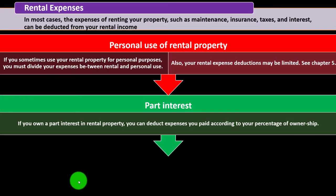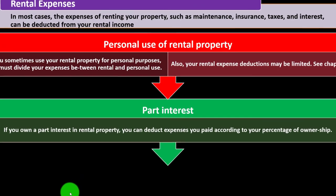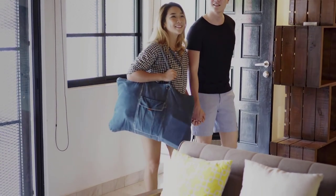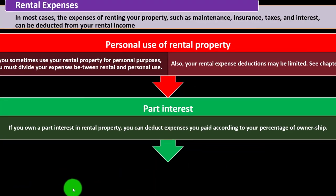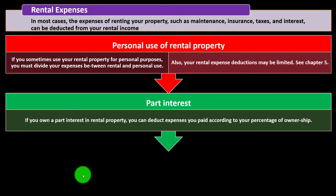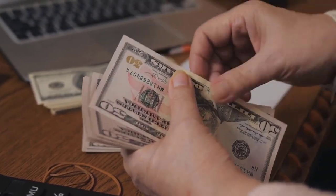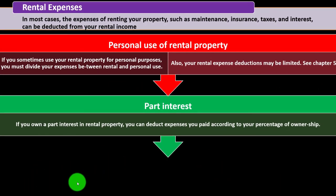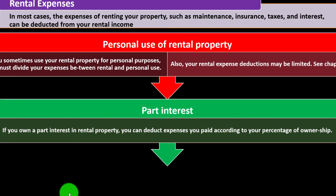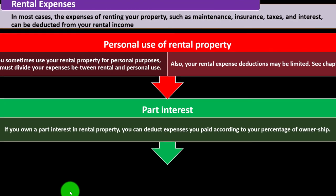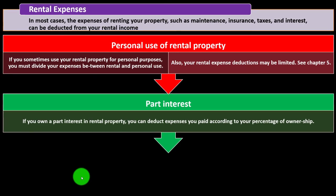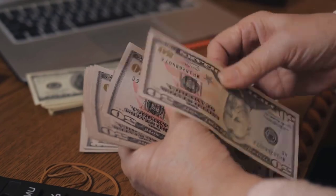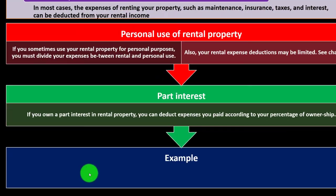On the income side, you don't typically have the same allocation problem, because if you rented only part of the property or for only part of the year, the rental income you received was already just for that portion. The allocation issue arises mainly with expenses, because the expenses you're paying cover both personal and business uses — and that's where allocation comes into play.